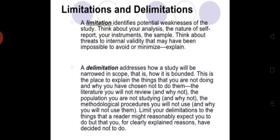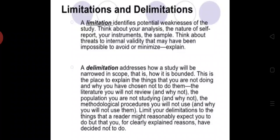In the delimitation part of the study, you inform the reader that you are going to delimit your study to some extent and explain why. A limitation identifies potential weaknesses of the study — think about your analysis, the nature of self-report, your instrument (which is your data collection tool), the sample, and threats to internal validity that may have been impossible to avoid or minimize. A delimitation, on the other hand, addresses how a study will be narrowed in scope — that is, how it is bounded.